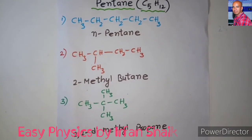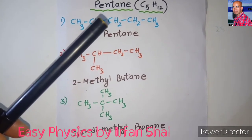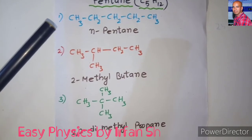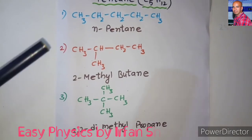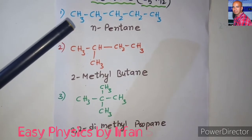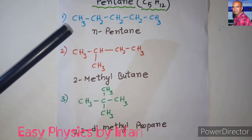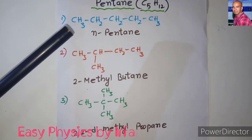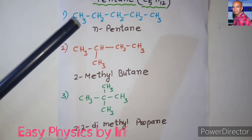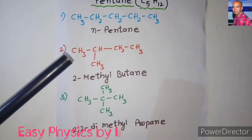Here we have the chemical formula of pentane, C5H12. C5H12 can be arranged in three ways. The first one is n-pentane: CH3–CH2–CH2–CH2–CH3. In this first structural formula we have 5 carbons and 12 hydrogens, giving us C5H12. This structure is called n-pentane.